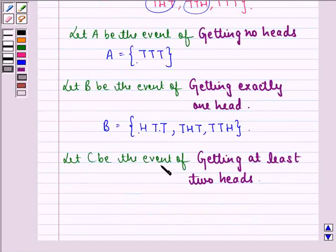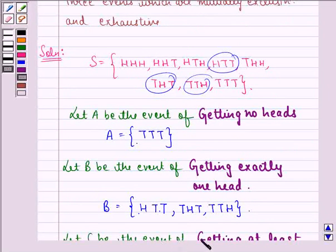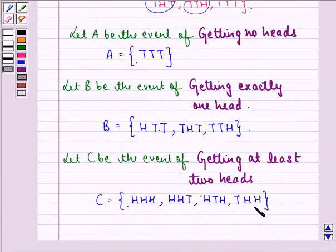Next, let C be the event of getting at least 2 heads. So the sample space for C will be, for the event C will be, HHH, HHT, HTH, THH. That is this.